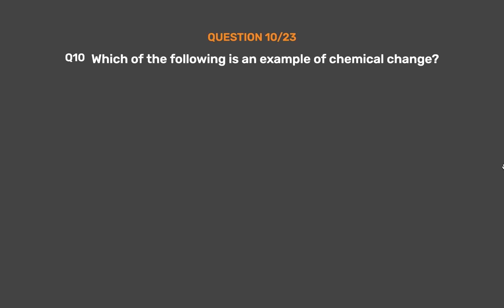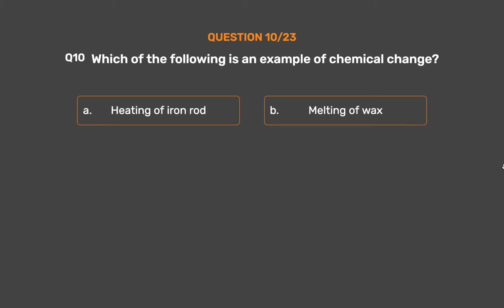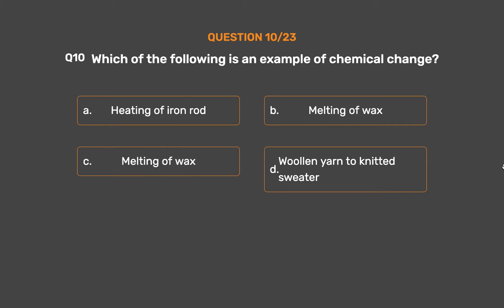Question number 10. Which of the following is an example of chemical change? Option A: Heating of iron rod. Option B: Melting of wax. Option C: Melting of wax. Option D: Woollen yarn to knitted sweater.